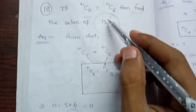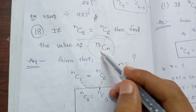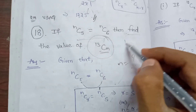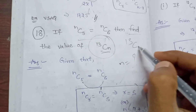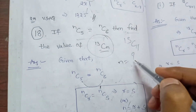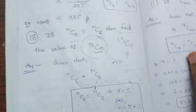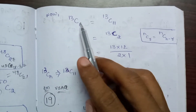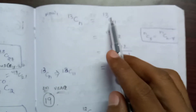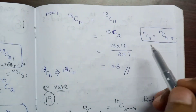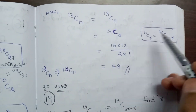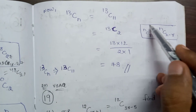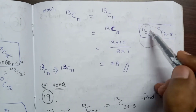So we will find the total value: 13C11. The value of n is equal to 11.